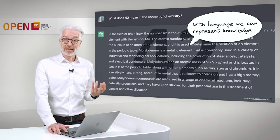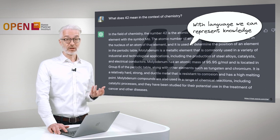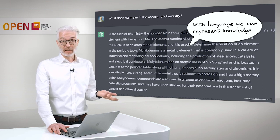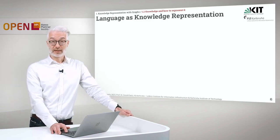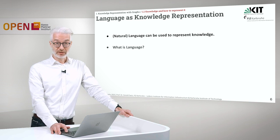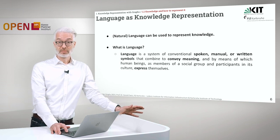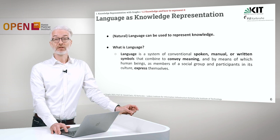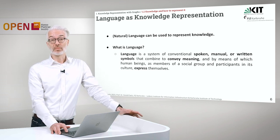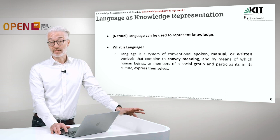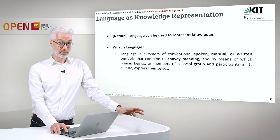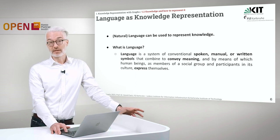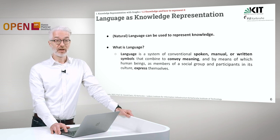So we could say that with language we can represent knowledge. We do that in our everyday life — always. So we can use language as a kind of knowledge representation. Language is a system of conventional, spoken, manual, or written symbols that combine to convey meaning, and by means of which human beings as members of a social group and participants in its culture express themselves. That's the lexicon or dictionary-based definition of language.